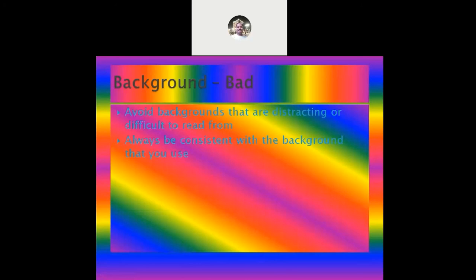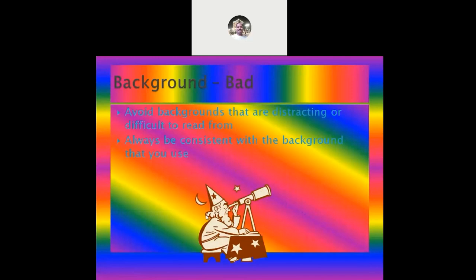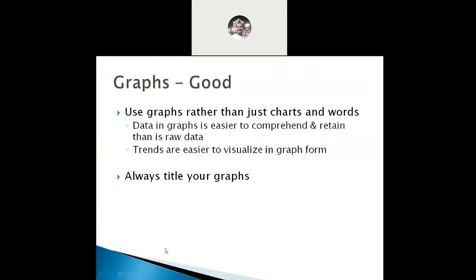This is an example of a bad background — in scientific presentations we usually do not present with such a background. Companies may provide such backgrounds and someone might be tempted to use them, but this type of background will never give a contrasting colored font to the text because it has multiple colors. Avoiding distracting or difficult-to-read backgrounds should always be the idea; a consistent and simple background should be used.